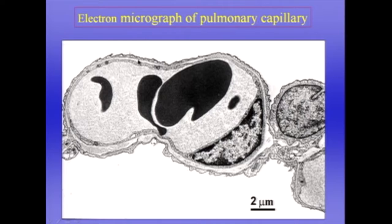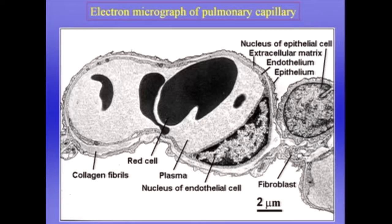Now one of the most important constituents of the interstitium is the type 4 collagen in the basement membranes, because we believe that's responsible for the strength of the blood gas barrier. As you might expect, a barrier that is this thin is rather fragile, and if the pressure inside the capillary rises to abnormally high levels, you can get ultrastructural changes in the blood gas barrier and leak fluid into the alveolar spaces. That situation is called stress failure. We've labelled the structures so that you can come back and refresh your memory, because it's very important that we understand the structure of the blood gas barrier.